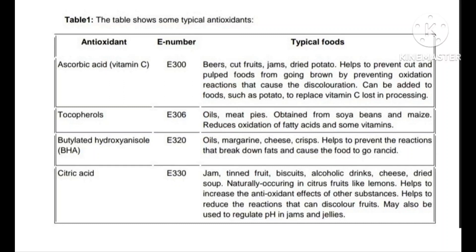Citric acid is found in jams, tender fruit, biscuits, alcoholic drinks, cheese, and dried soup. It naturally occurs in citrus fruits like lemons and helps to increase the antioxidant effects of other substances. It helps reduce reactions that can discolor foods and may also be used to regulate pH in jams and jellies.